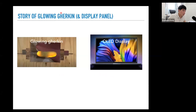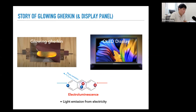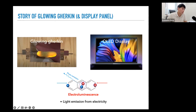The common thing between the glowing gherkin and the OLED display is that you are seeing emission from organic materials. This process of having light emission from electricity is called electroluminescence. In anthracene, for example, you inject an electron and a hole from the other side; they form an exciton in the middle and recombine to produce a photon. This process is common to both the glowing gherkin and the OLED display.